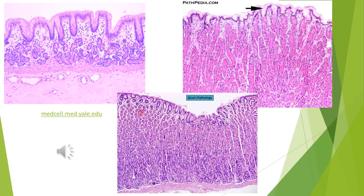Keep in mind that the body and fundus contain abundant parietal and chief cells. The antrum contains antral glands secreting mucus, no parietal cells, but neuroendocrine G cells producing gastrin that are better highlighted by immunohistochemical stains. The three microscopic pictures represent hematoxylin and eosin stained slides visualized under the light microscope.